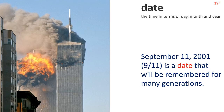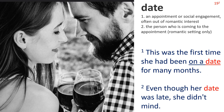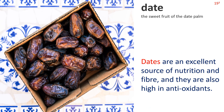Date — Definition 1: the time in terms of day, month and year. September 11, 2001, or 9-11, is a date that will be remembered for many generations. Definition 2: an appointment or social engagement, often out of romantic interest, or the person who is coming to the appointment in a romantic setting. This was the first time she had been on a date for many months. Even though her date was late, she did not mind. Definition 3: the sweet fruit of the date palm. Dates are an excellent source of nutrition and fibre, and they are also high in antioxidants.